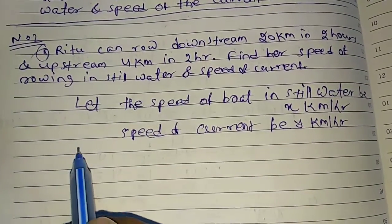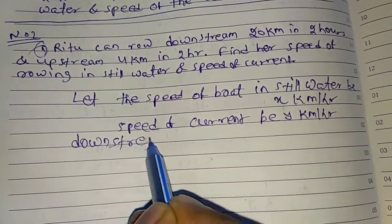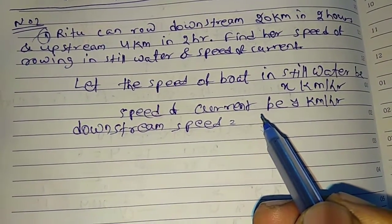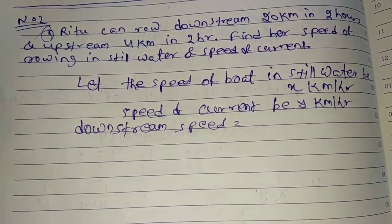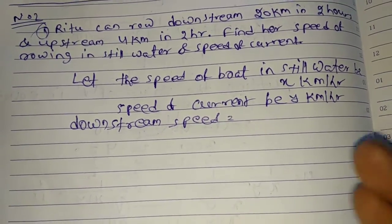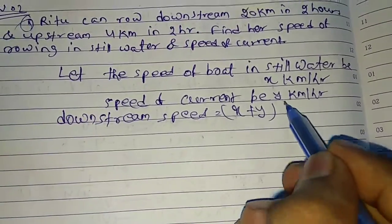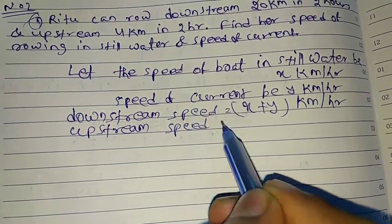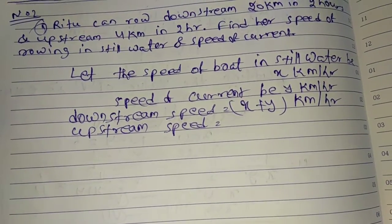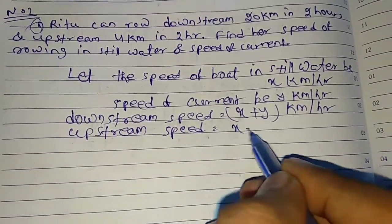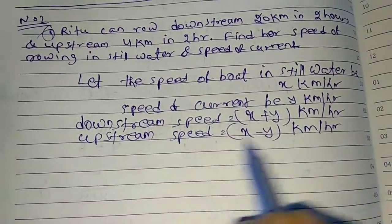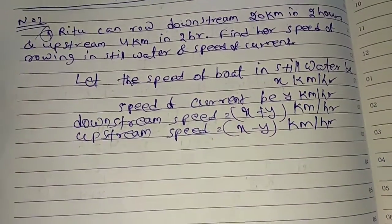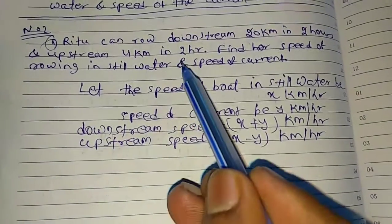Then we have downstream speed. What is downstream speed? Downstream speed means the boat will go along the direction of a stream, means the speed increases, addition of both speeds. That is x plus y km per hour. And upstream speed means the boat will go opposite to the direction of a stream, means the speed decreases, difference. You have to remember these two lines because we have to convert them as time. We have to write the equation in the form of time because RHS contains time.